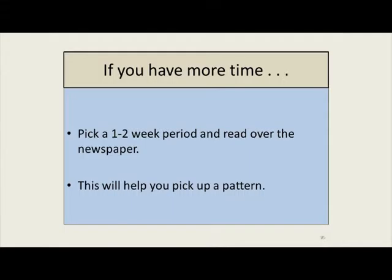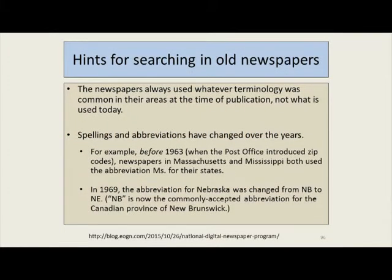Finding older newspapers: first ask yourself, does a copy of the newspaper exist in any form? Where to look: libraries and newspaper offices. If you have enough time, pick a one to two week period and read the entire newspaper — this will help you pick up a pattern. A few hints when searching: newspapers always used whatever terminology was common in their area at the time of publication. Spelling and abbreviations have changed over the years — for example, before 1963 when zip codes were introduced, Massachusetts and Mississippi both used the abbreviation MS.